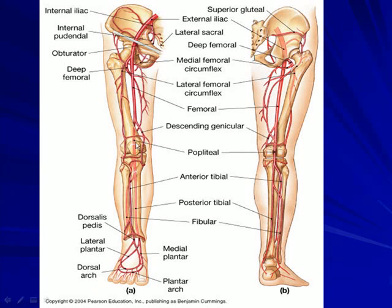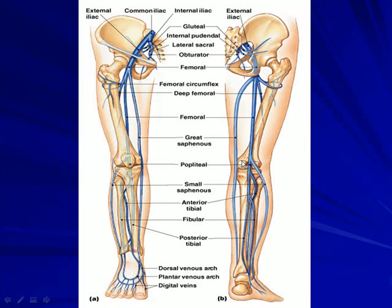You should recognize those vessels. The popliteal vessel is best viewed posteriorly. For the deep veins of the lower leg — the femoral, the great saphenous, and the deep femoral — these are locations where blood clots can grow and migrate into the pelvic vessels, so it's important to recognize those deep vessels.